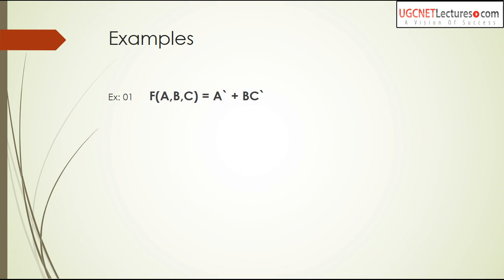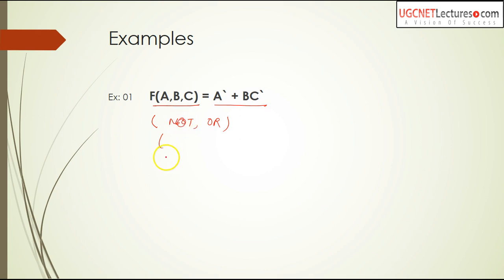In an exam, the question will be: you have a function F(A, B, C) with a given definition, and you must prove whether this function is functionally complete or not. How do we declare whether a function is functionally complete? You should be able to derive either NOT and OR, or NOT and AND, from this function. So first, I want to derive the complement (NOT) operation. I want A complement, B complement, C complement. If I can get complement from this function, I then check for AND or OR.